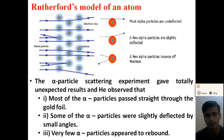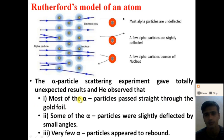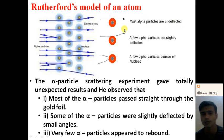But the result was quite different. The alpha particle scattering experiment gave a totally unexpected result. Rutherford observed that most of the alpha particles passed straight through the golden foil. The first observation from the experiment is that most of the alpha particles passed straight through the golden foil.